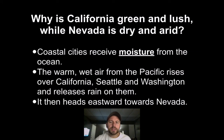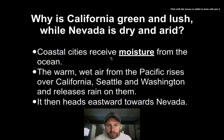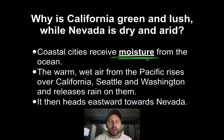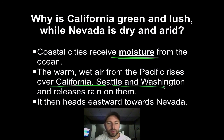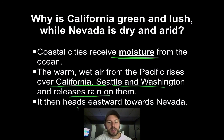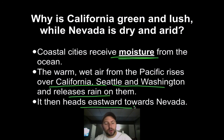What we see is California is green and lush while Nevada is dry and arid. One reason is that coastal cities receive moisture from the ocean — their proximity to the ocean means there's more humidity in the air and it can get more rain. The warm wet air from the Pacific rises over California, Seattle, and Washington — the whole west coast of the United States — and releases rain on them. It then heads eastward towards Nevada.